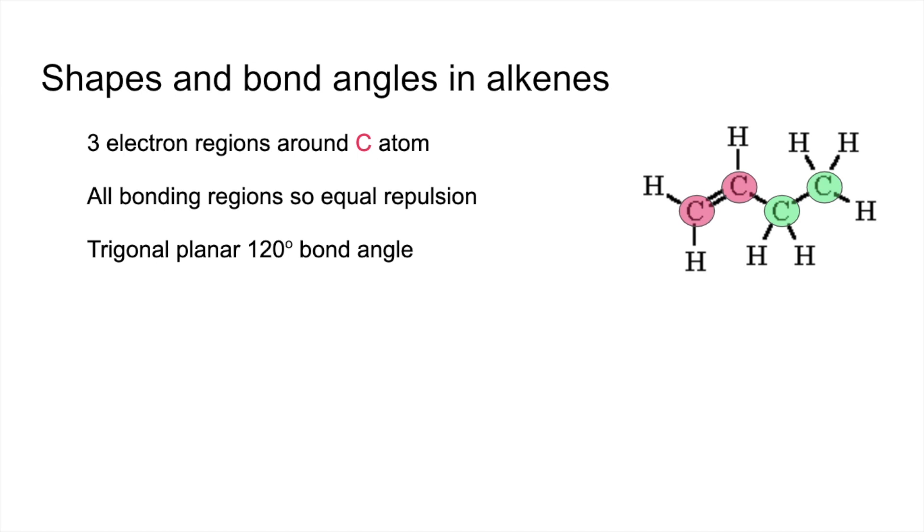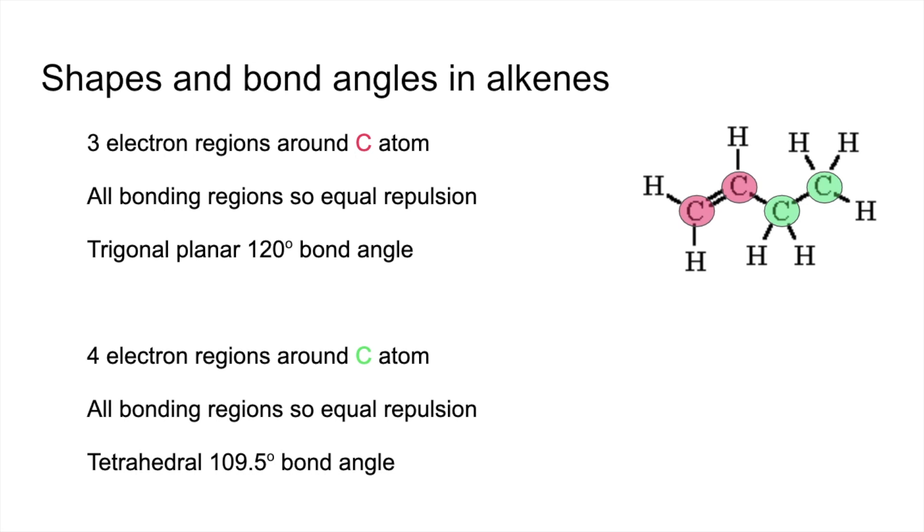The green carbons—if we look at this one here, one, two, three, four—we've got four electron regions around each of these green carbons. All bonding regions, so no lone pairs, so we've got equal repulsion. The shape and angle associated with that combination is tetrahedral, 109.5 degree angle.